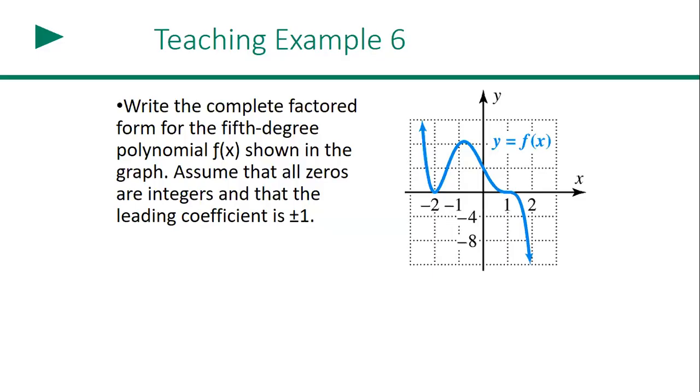So that in mind, here's an example. So you look right here. It says, write the complete factored form of the fifth degree polynomial shown in the graph. Assume that all zeros are integers and that the leading integer is plus or minus one. So the first thing we have is f of x equals. And we got to decide whether our leading coefficient is positive or negative. Whether your leading coefficient is positive or negative is based off how does your graph end? And how does our graph end?